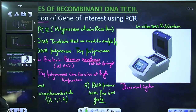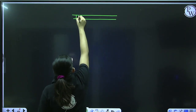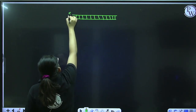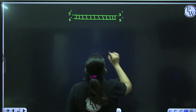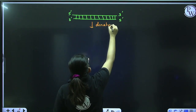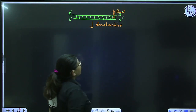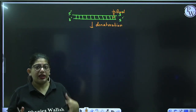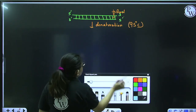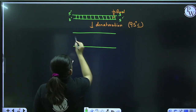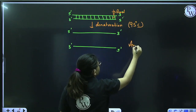In the thermal cycler, you add your one DNA strand to multiply. Imagine this is the gene you want to multiply — this is the 5' end and this is the 3' end. Now you will denature it. Denaturation means breaking the hydrogen bonds between the two strands, and this takes place at high temperature of 95 degrees Celsius. Once denaturation takes place, both strands get separated.